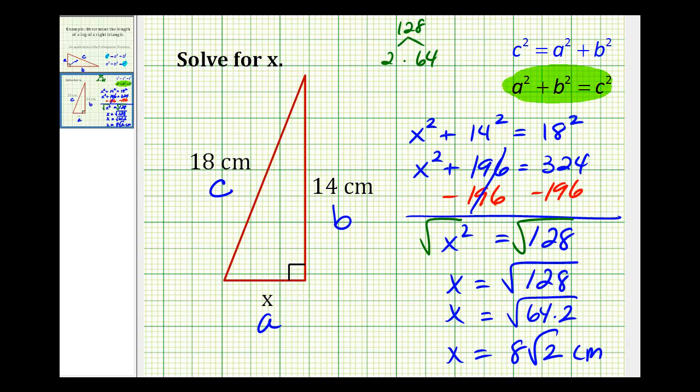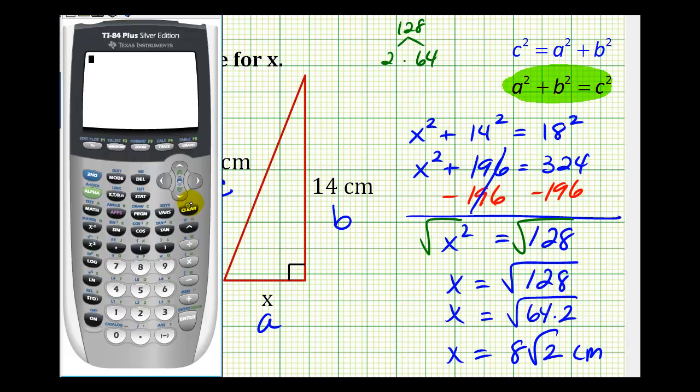If we want to get a decimal approximation, we would need our calculator. Let's first type in square root of 128. This is approximately 11.3 centimeters. To check our work, let's type in 8 times square root 2 to make sure we get the same decimal value. And we do, which verifies that we simplified this correctly.